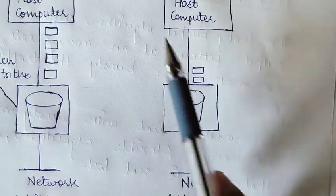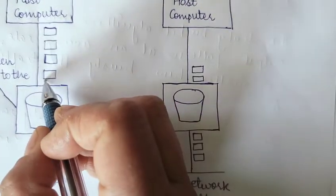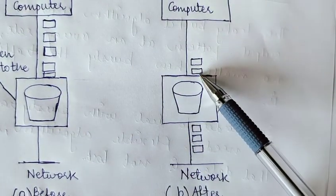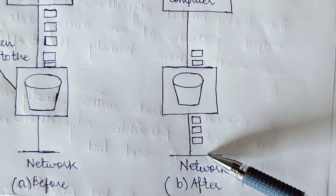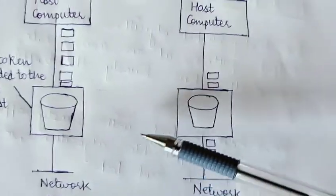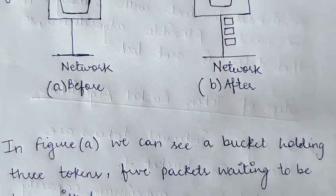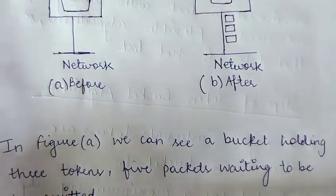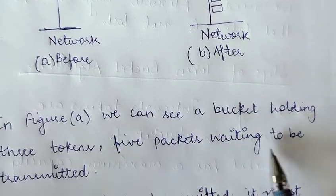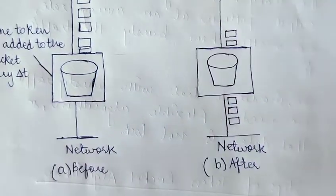The second scenario shows a host computer where, out of five data packets, three have already been transmitted. Earlier there were five data packets; now only two are left and three have already been transmitted. In figure a, we can see a bucket holding three tokens and five packets waiting to be transmitted. Three tokens means that at any given point of time, no more than three packets can be transmitted.